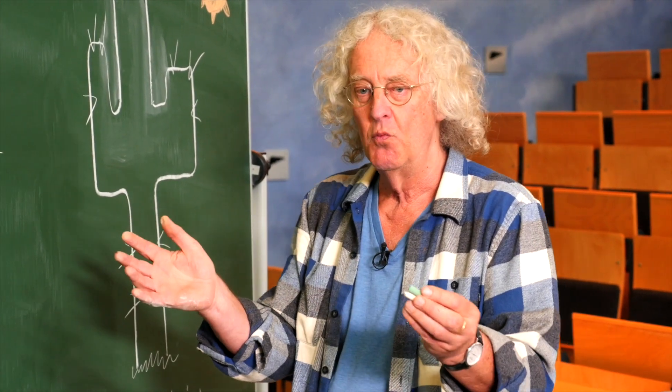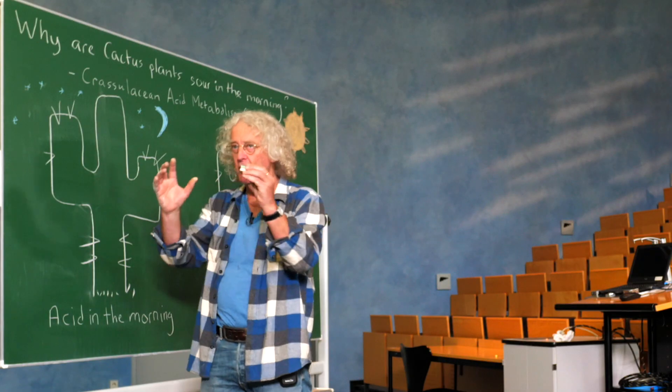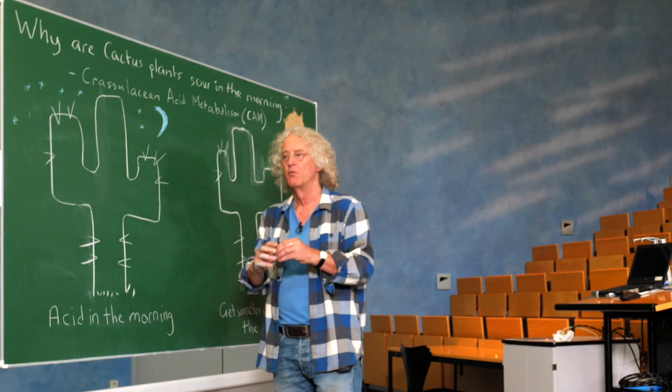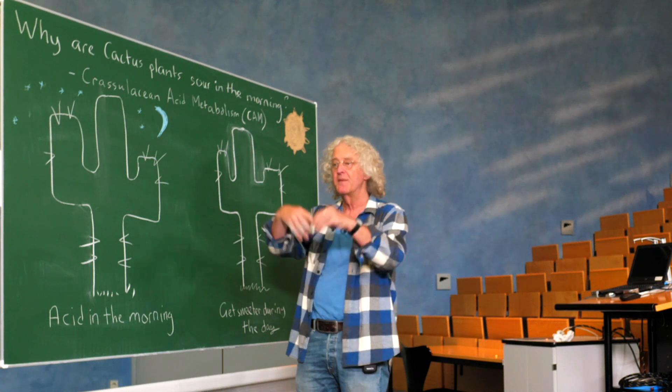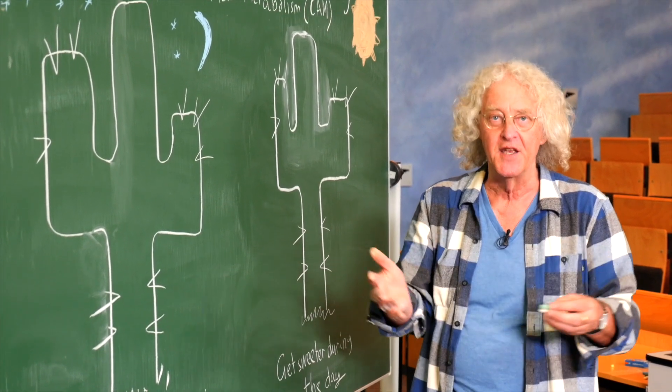This is because in the day, when there's light, they open their stomata, these are little holes in the surface of the leaf, to let in carbon dioxide and at the same time they lose water. And they lose a lot of water because in the day it's hot.